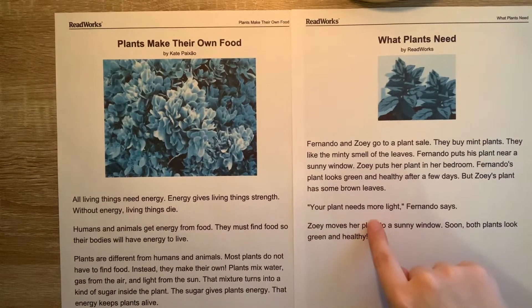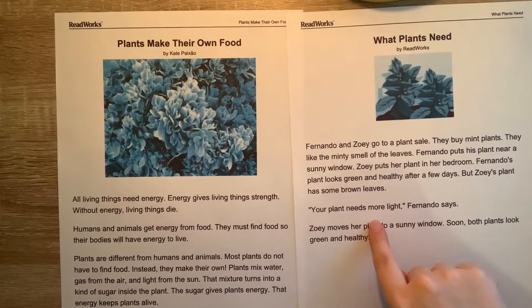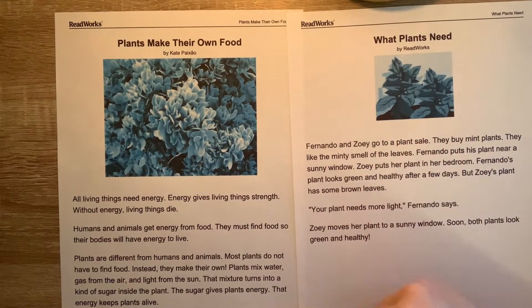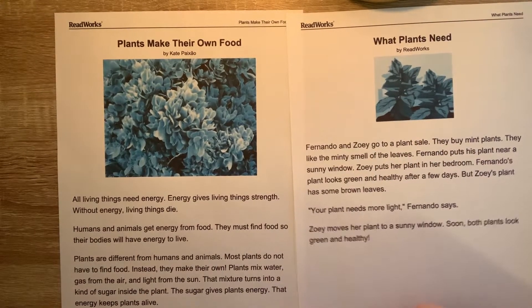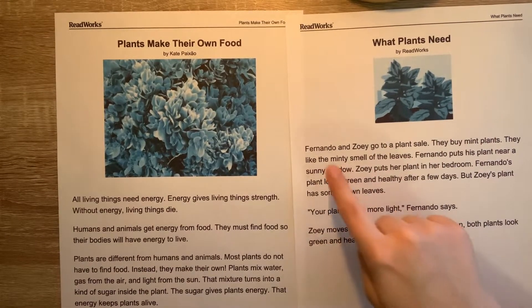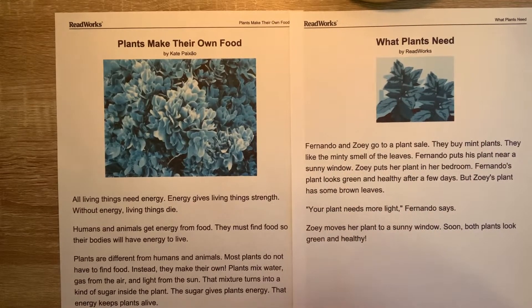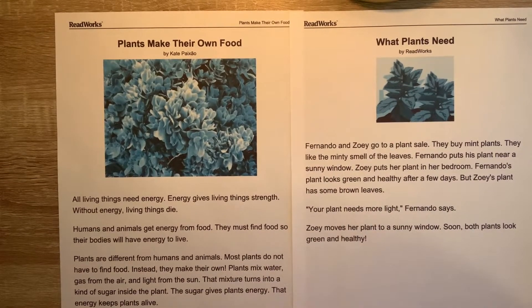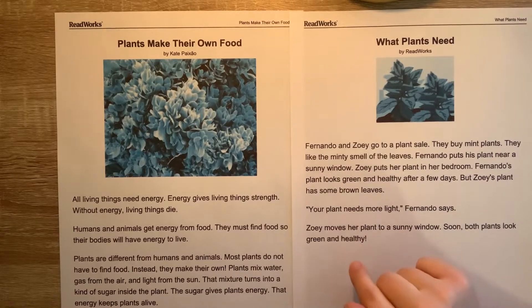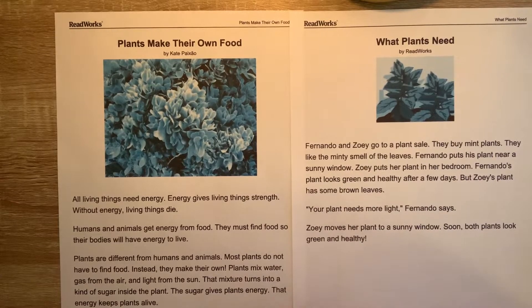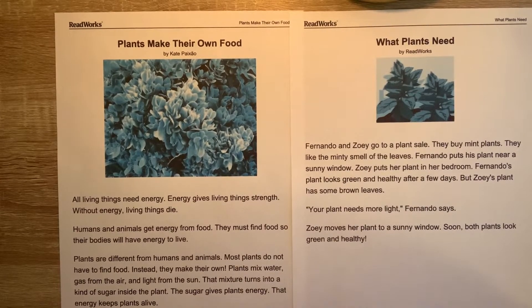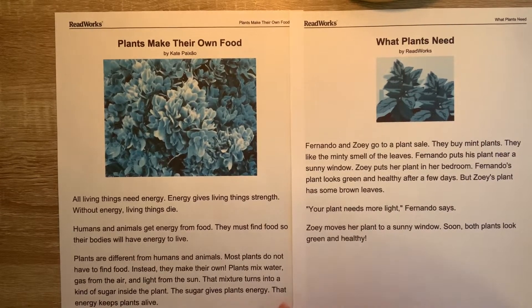The second text was telling us a story. How do we know this? Well, there were two characters, Fernando and Zoe, who were talking about the plants. They encounter a problem with their plant growing, and they fix it by putting the plant in the sun.